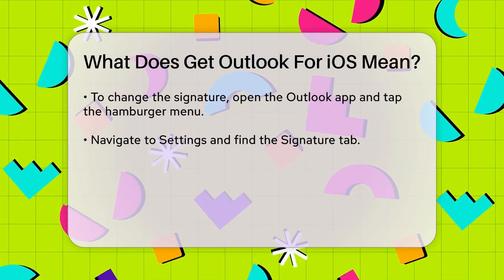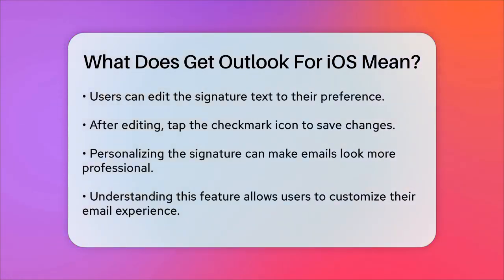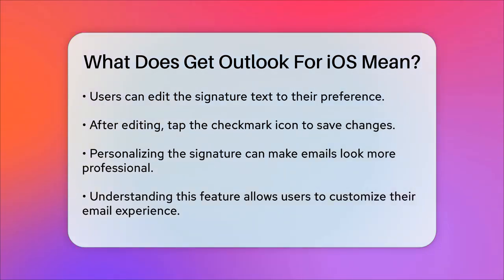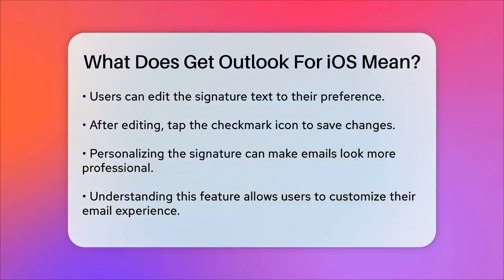This way, you can personalize your emails and make them more professional or tailored to your needs. So, the next time you see 'Get Outlook for iOS' at the end of your email, you'll know it's just a default promotion, and that you have the power to change it to something more suitable for you. In summary, 'Get Outlook for iOS' is a default signature added by Microsoft to promote their app, but you can easily customize it to fit your email needs.